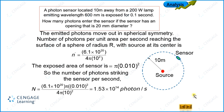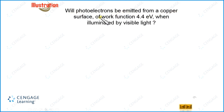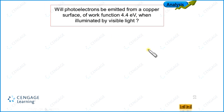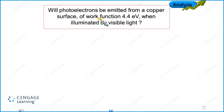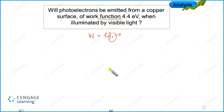Now let us move to the next illustration. It is given: will photoelectrons be emitted from a copper surface with work function 4.4 electron volt when illuminated by visible light? In the analysis, we use the relation which connects work function with threshold frequency: W = hF₀, where F₀ is the threshold frequency — the minimum frequency of incident radiation at which photoelectric emission is possible.